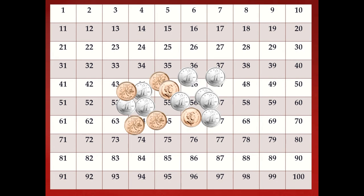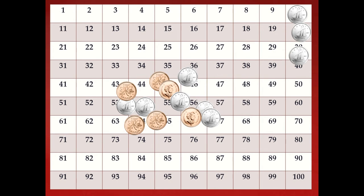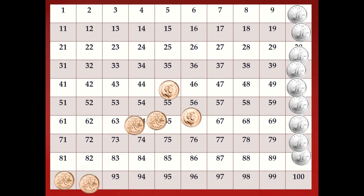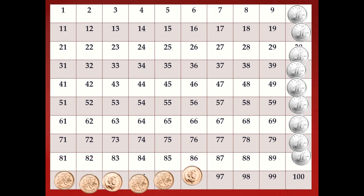We have some more money here, and we're going to use our hundreds chart to help us count it. I want you to count with me. Our dimes are worth the most out of these coins, so we're going to start counting with dimes: ten, twenty, thirty, forty, fifty, sixty, seventy, eighty, ninety, ninety-one, ninety-two, ninety-three, ninety-four, ninety-five, and ninety-six. Ninety-six cents. Good counting.